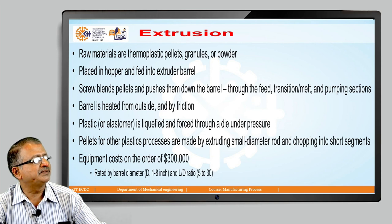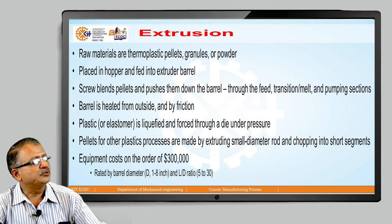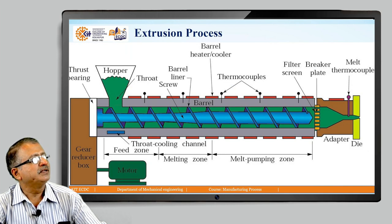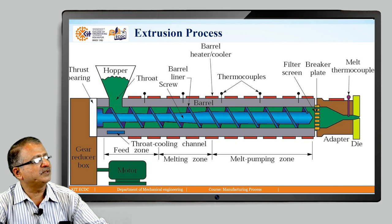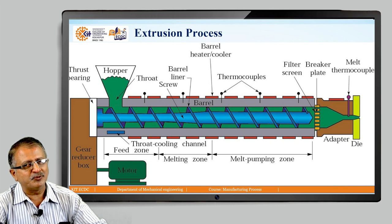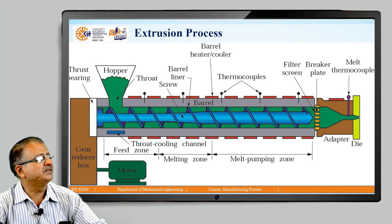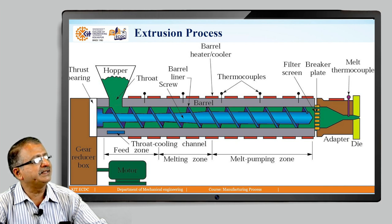The stages in the extrusion process: raw materials — thermoplastic pellets, granules, or powder — are placed in the hopper and fed into the extruder barrel. The screw blends the pellets and pushes them down the barrel through the feed zone. Pellets of other plastic processes are also made by extruding small-diameter rod. The equipment includes a thrust bearing, gear reducing box, and a motor using variable speed to rotate the screw.